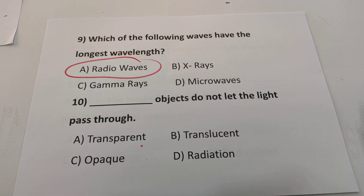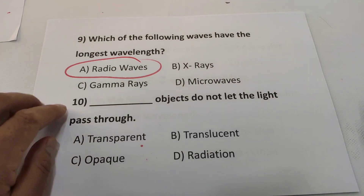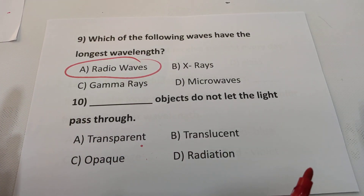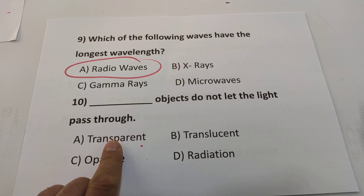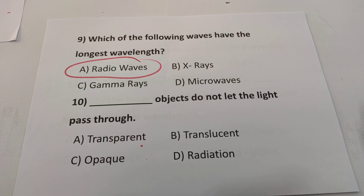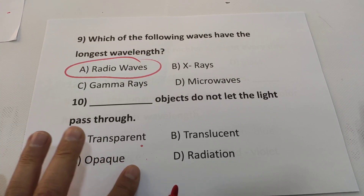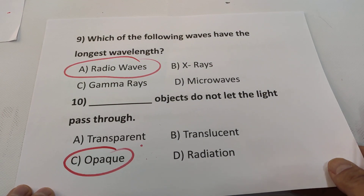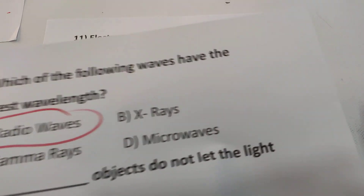Question 10: Objects that do not let light pass through — there are three kinds of objects: transparent (all light passes), translucent (some light passes but is scattered), and opaque (no light passes). The answer is C — opaque objects do not let light pass through.